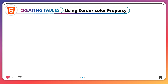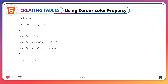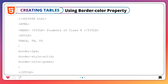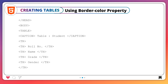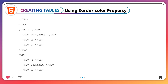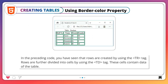Using the border-color property: the border-color property allows you to apply a color to the border. For example, let us create a table using the above properties. In the preceding code, you have seen that rows are created by using the tr tag. Rows are further divided into cells by using the td tag. These cells contain the data of the table.